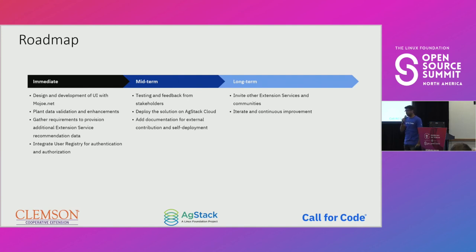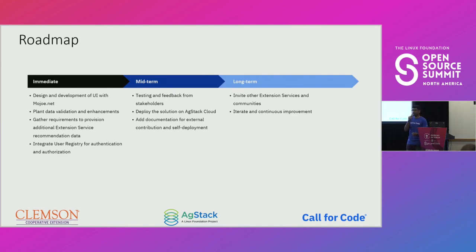Our immediate steps right now: we're working with the Mojo.net team to create the user-friendly interface, working with the Clemson team on user journeys and wireframes, and validating plant information and sample data. We're also gathering more requirements to accommodate more categories of agriculture-related information beyond crops. And AgStack has a user registry project that we want to integrate with to enable login authentication and authorization.